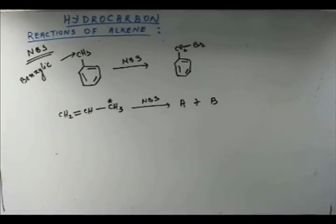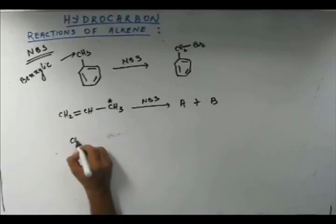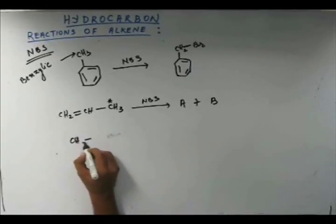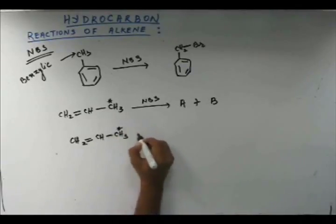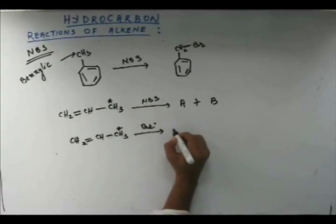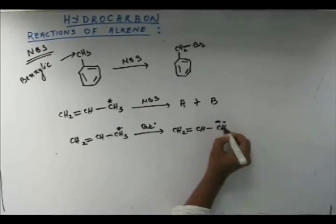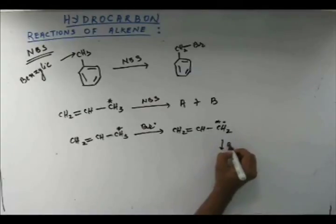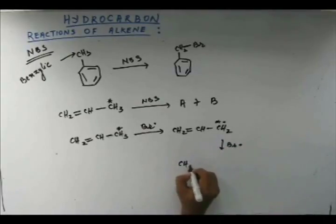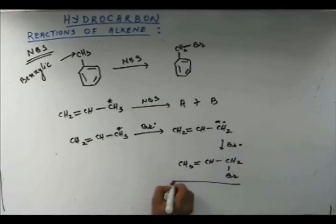Let's do the mechanism first. NBS is going to give bromine free radicals slowly. This bromine free radical is going to come and abstract a hydrogen from the allylic position. So I am going to get a free radical on this starred carbon. Then again a bromine free radical is going to come and form a bond with this carbon radical, giving me this — so this is one of the products.